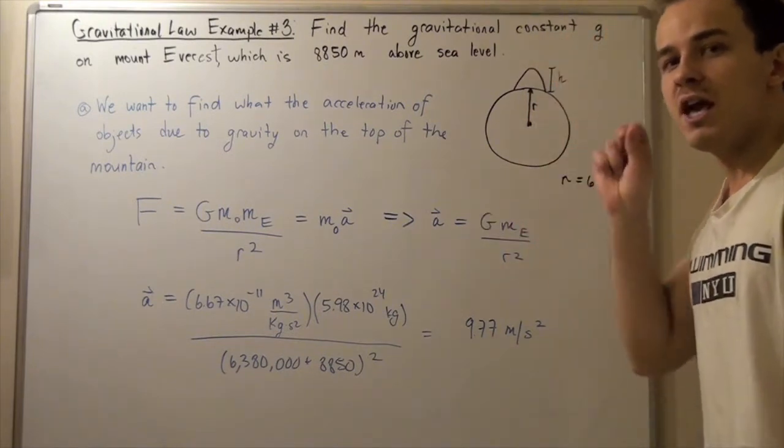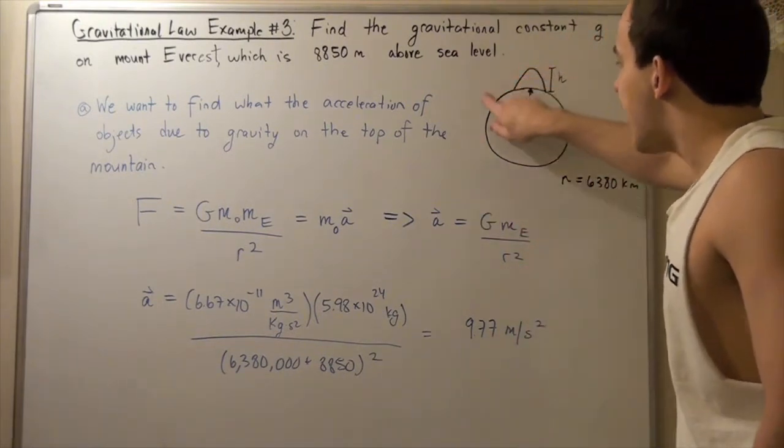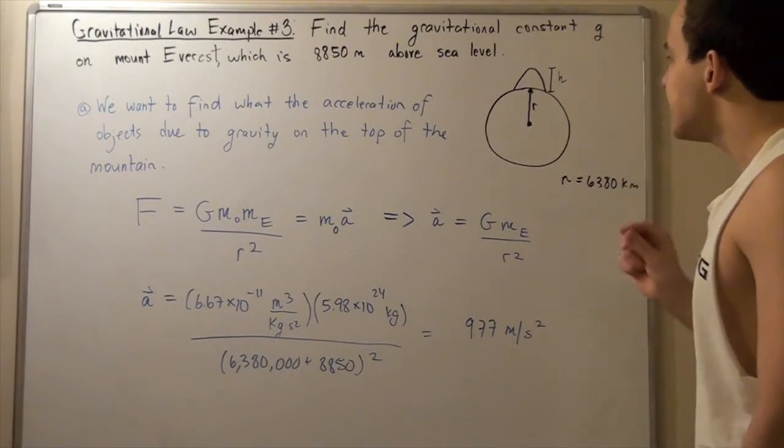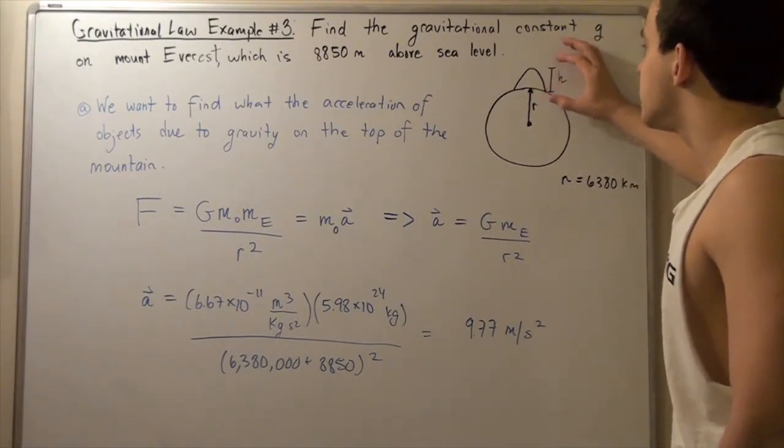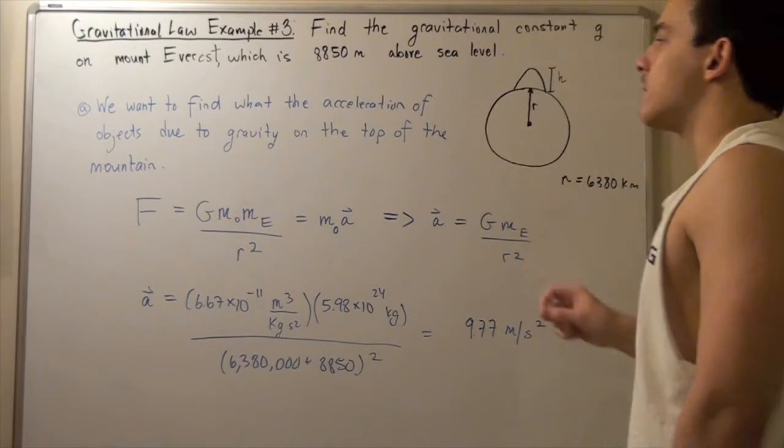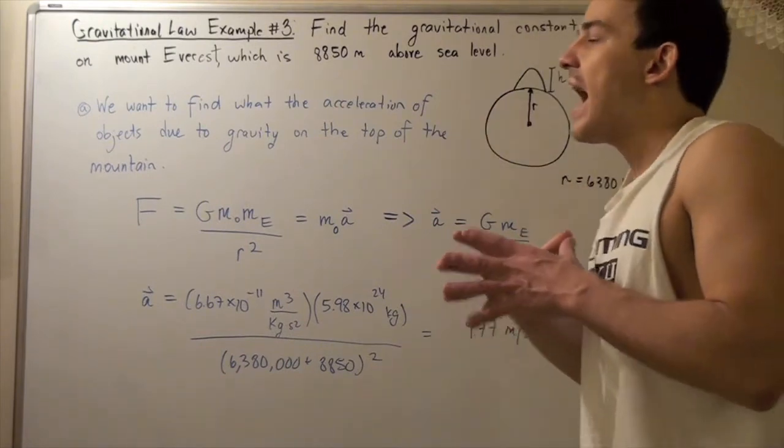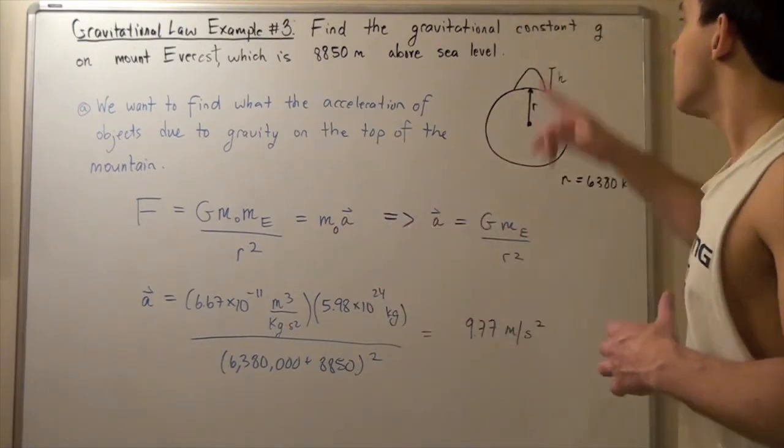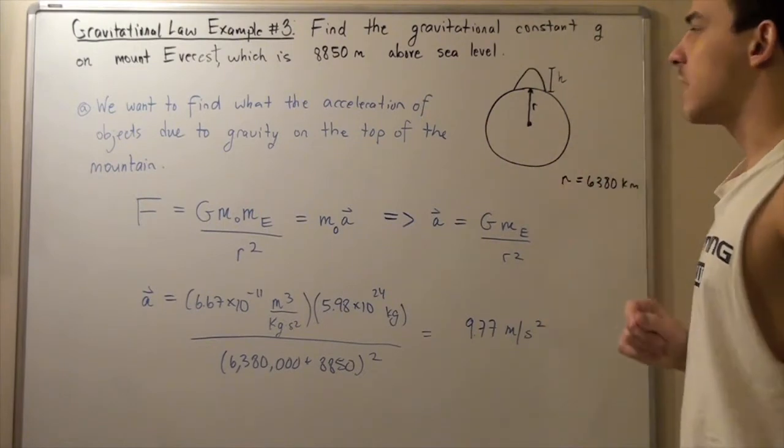Now this G will be different than the G on the surface of the Earth, and that's because there's a height difference of H, of 8.85 kilometers. We want to see how much different the G is from the G on the surface of the Earth.